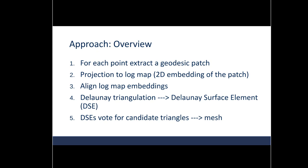Now let's talk about the learning DSE's approach. First, a geodesic patch is extracted for each point, and then that geodesic patch is projected to a log map, which is a 2D embedding of the patch. Then these log maps are aligned, and then they're Delaunay triangulated, and then we call these Delaunay triangulated log map embeddings of geodesic patches, we call those Delaunay surface elements. The Delaunay surface elements, or DSE's, that vote for candidate triangles, and those candidate triangles become the mesh.